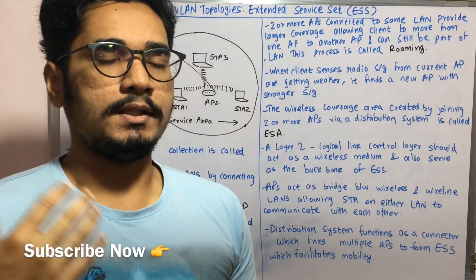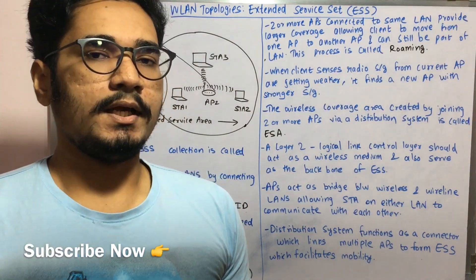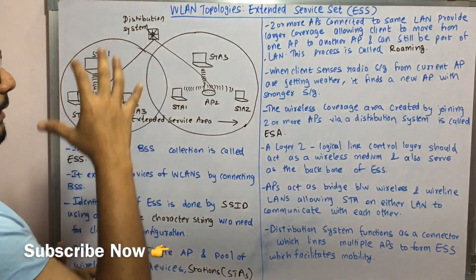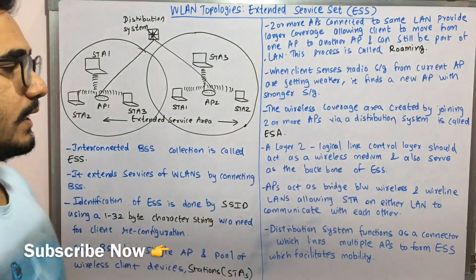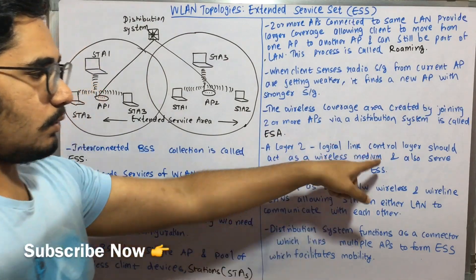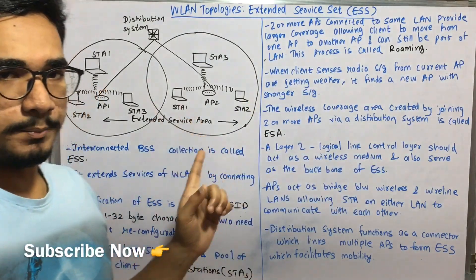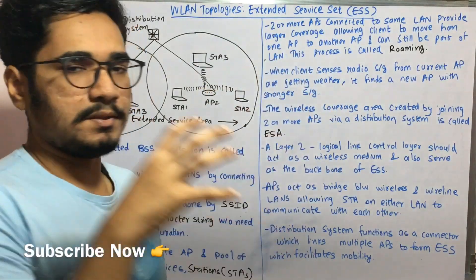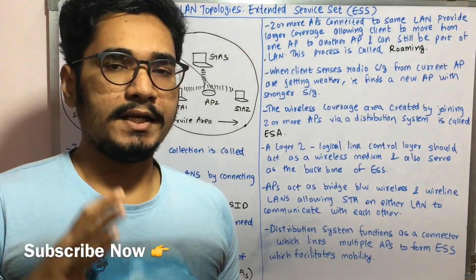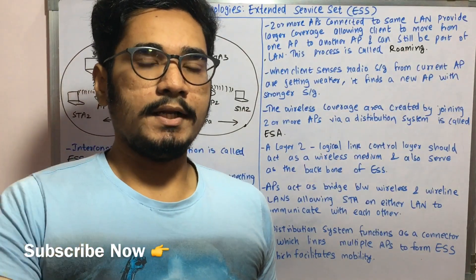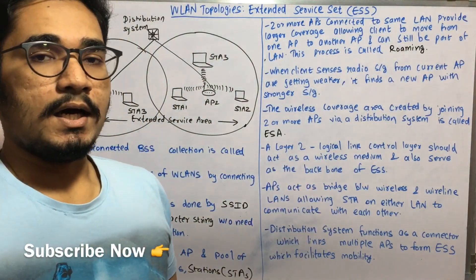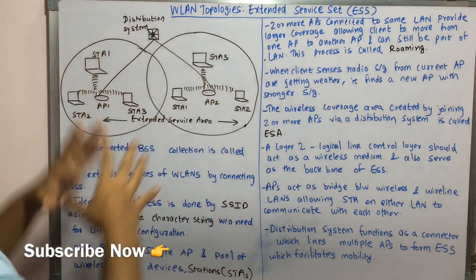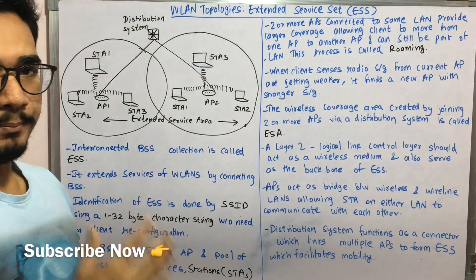There is a requirement from the OSI model — the Open Systems Interconnection model with its seven layers. A key requirement is that Layer 2, the data link layer, specifically the Logical Link Control (LLC) sublayer, must act as a wireless medium for any transfer done in the ESS and also serve as the backbone for the ESS. Any framework used for transmitting signals must have this Layer 2 LLC component.